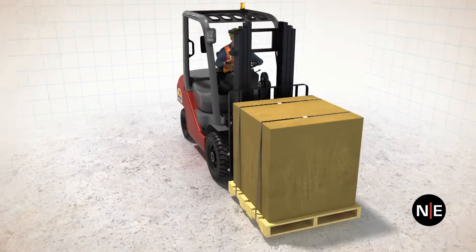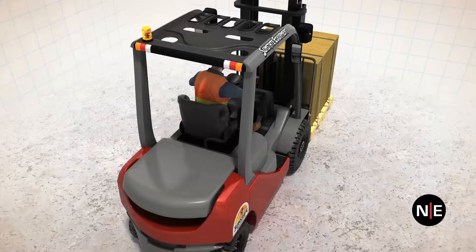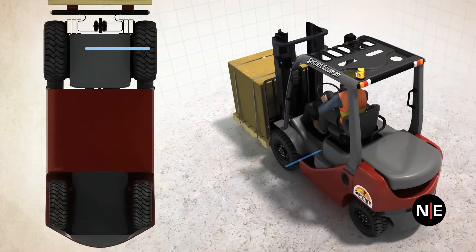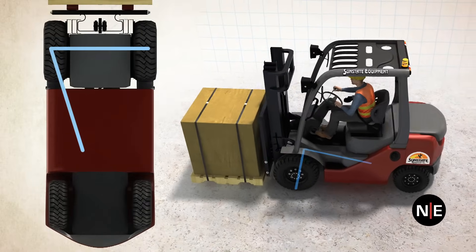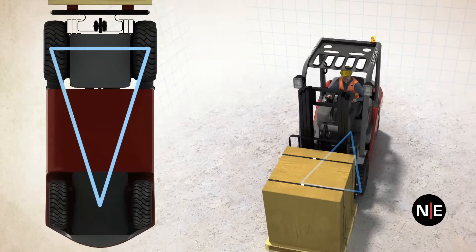A forklift has three points of stability: the two front tires and the pivot point on the rear axle. If you draw a line between the two front tires to the pivot point on the rear axle and back again, you get that forklift's stability triangle.